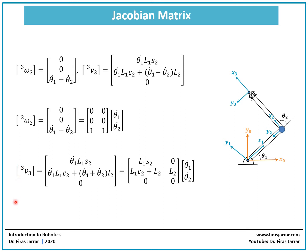The same thing can be done for the linear velocity of the end effector. This is the expression we obtained last time, and today we write it as a product of two matrices. You can verify this by multiplying each row by the column matrix — for example, l1 sin(theta 2) times theta 1 dot gives the first entry, and you can do the same for the second and third rows.